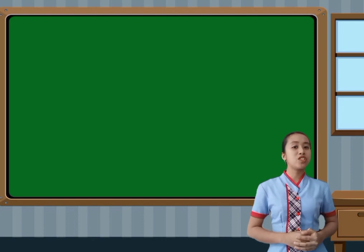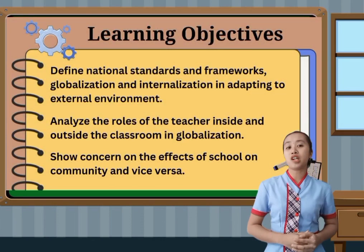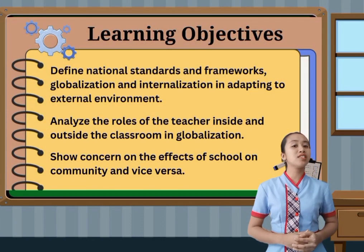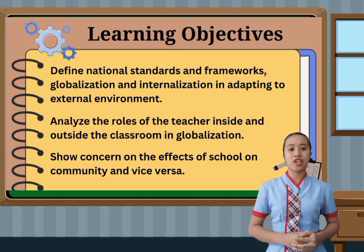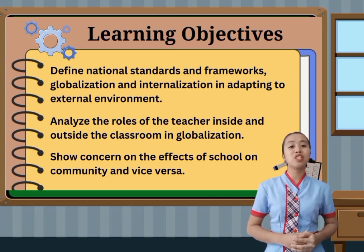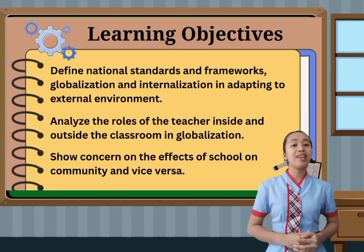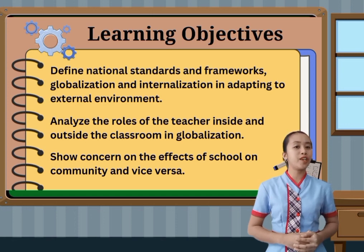Before we proceed to the discussion, let us first know the learning objectives of this topic. For knowledge: define national standards and frameworks, globalization, and internationalization in adapting to the external environment. For skills: analyze the roles of the teacher inside and outside the classroom in globalization. And for affective: show concern on the effects of school and community, and vice versa.